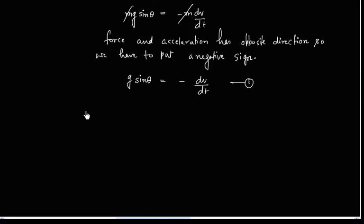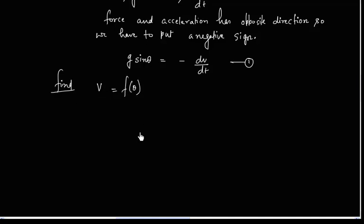Let us call this equation 2. We have to find velocity as a function of theta. So we can use equation 2. Let us multiply and divide by d theta.